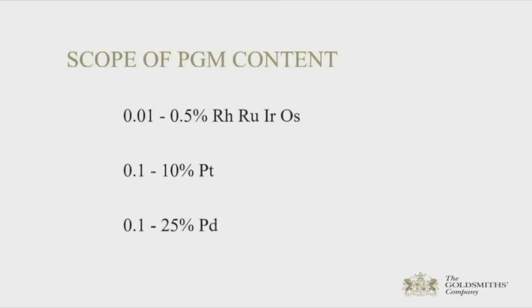Fire assay is generally regarded as the most accurate method of analysis for gold within an alloy, but there are limitations when PGMs are present in the original sample. We can still use fire assay as an alternative method of analysis for gold alloys when the samples contain higher than trace amounts of PGMs.